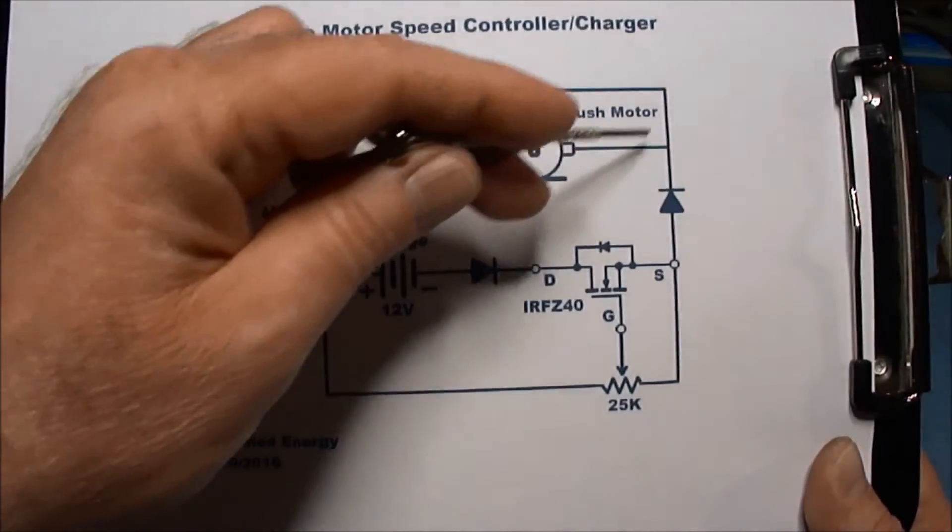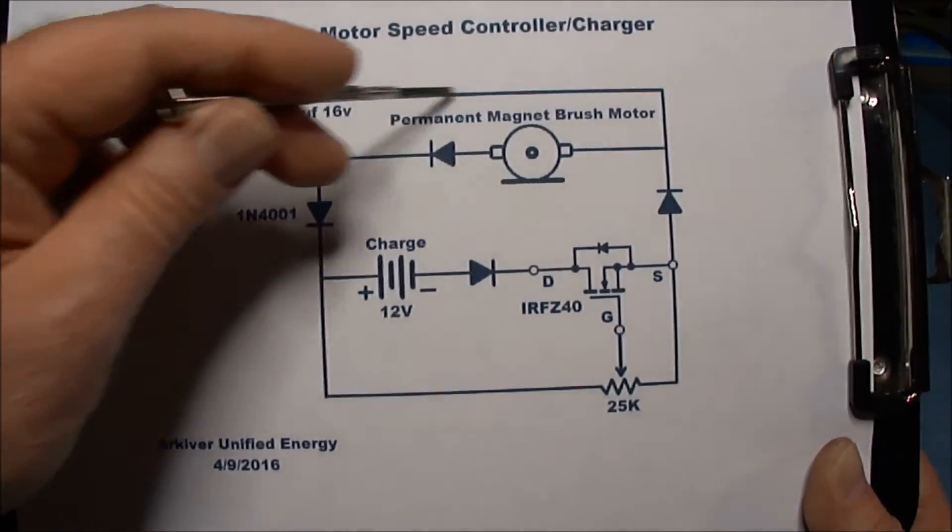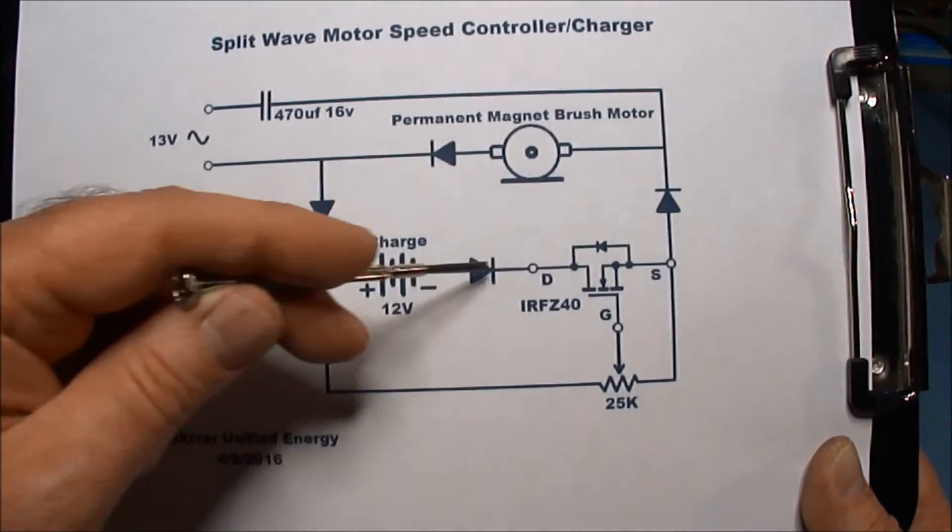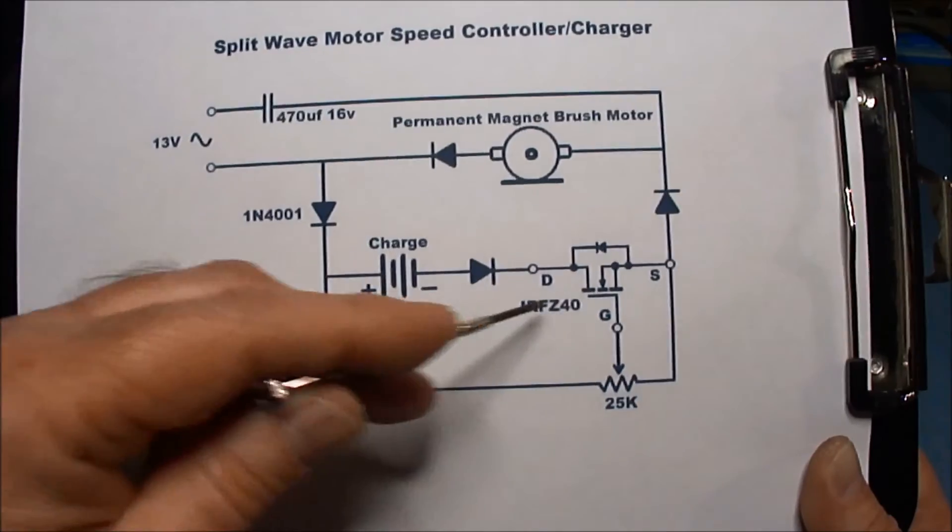So the AC wave goes through, charges the cap, and then when the wave shifts, the energy comes out and goes through the source and out the drain. This diode helps protect the transistor.